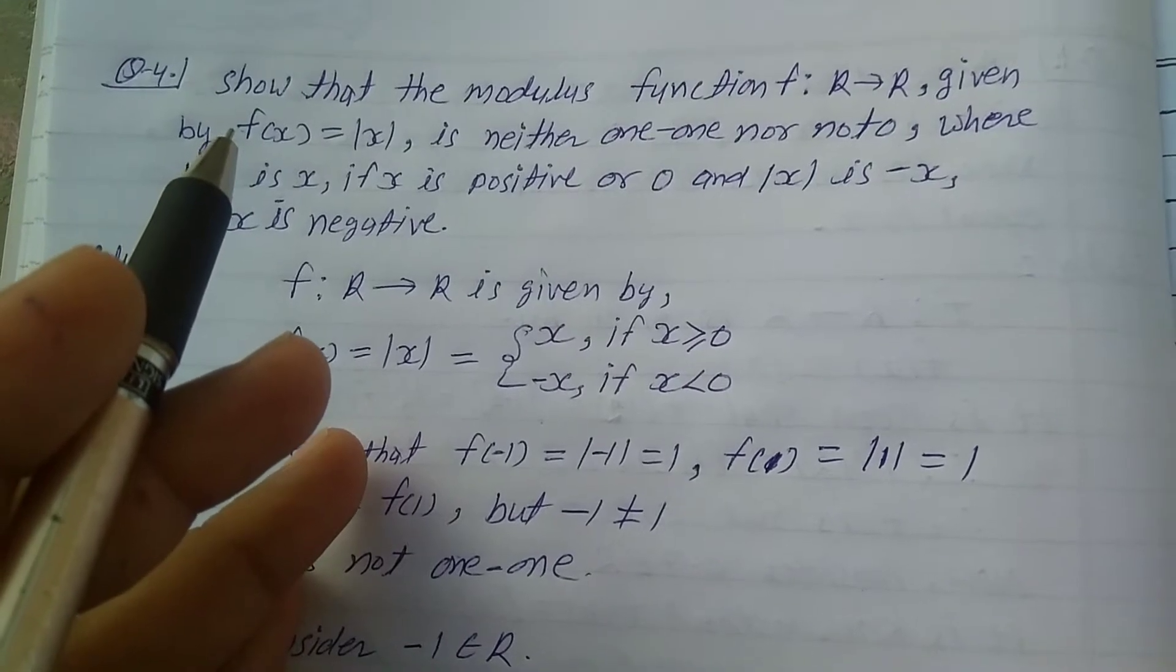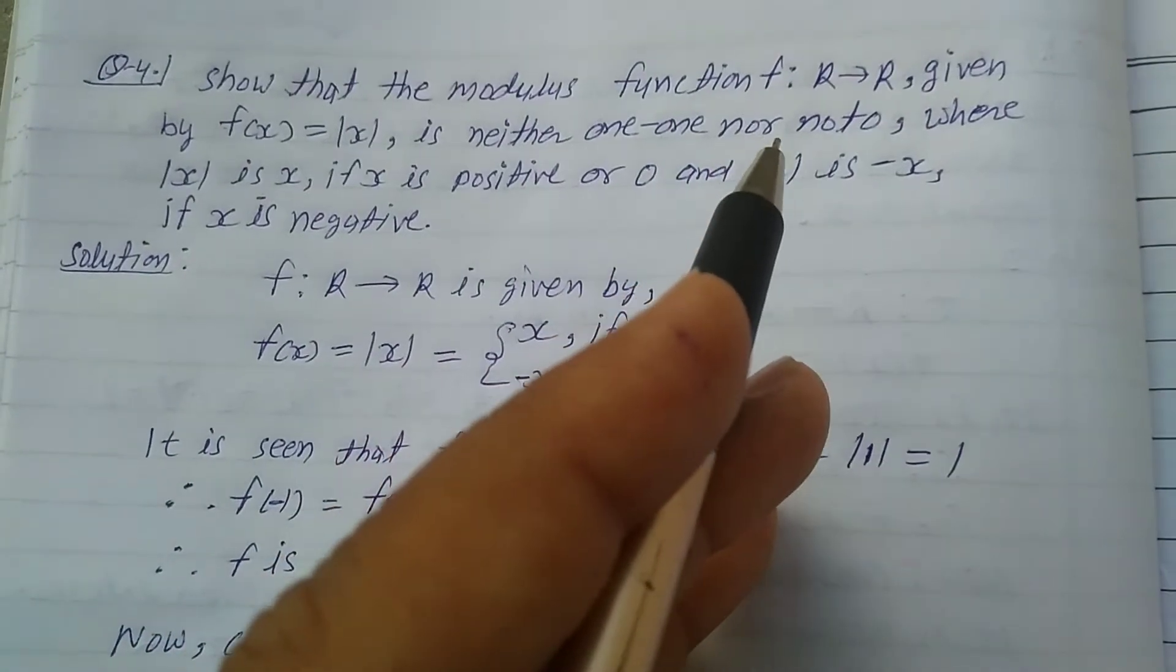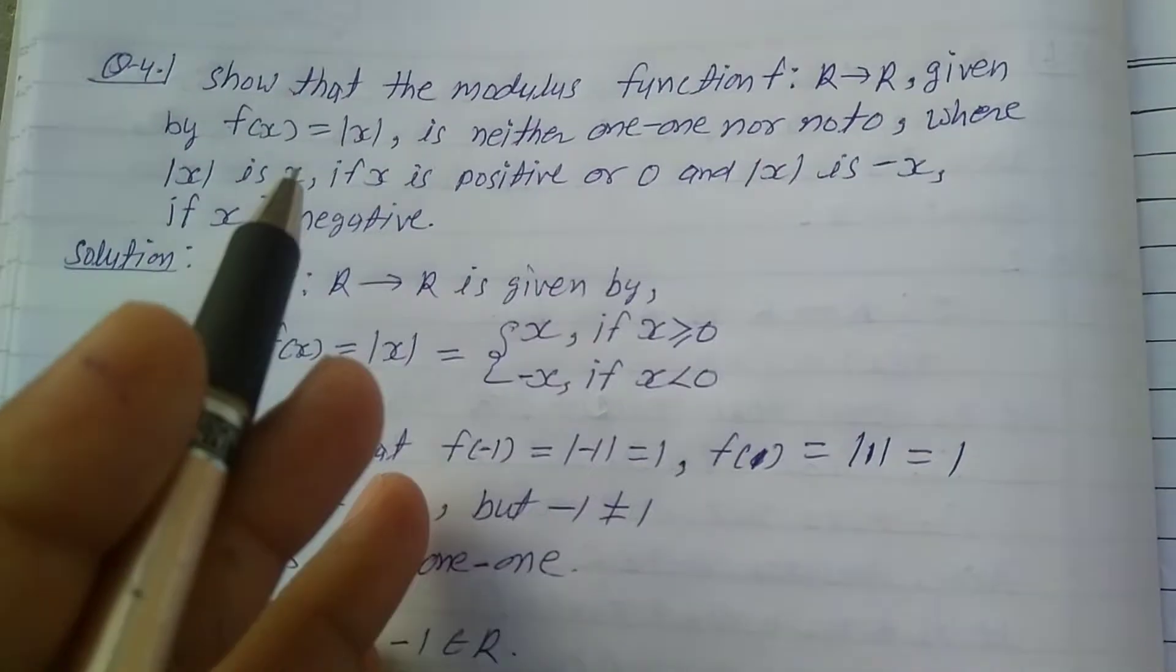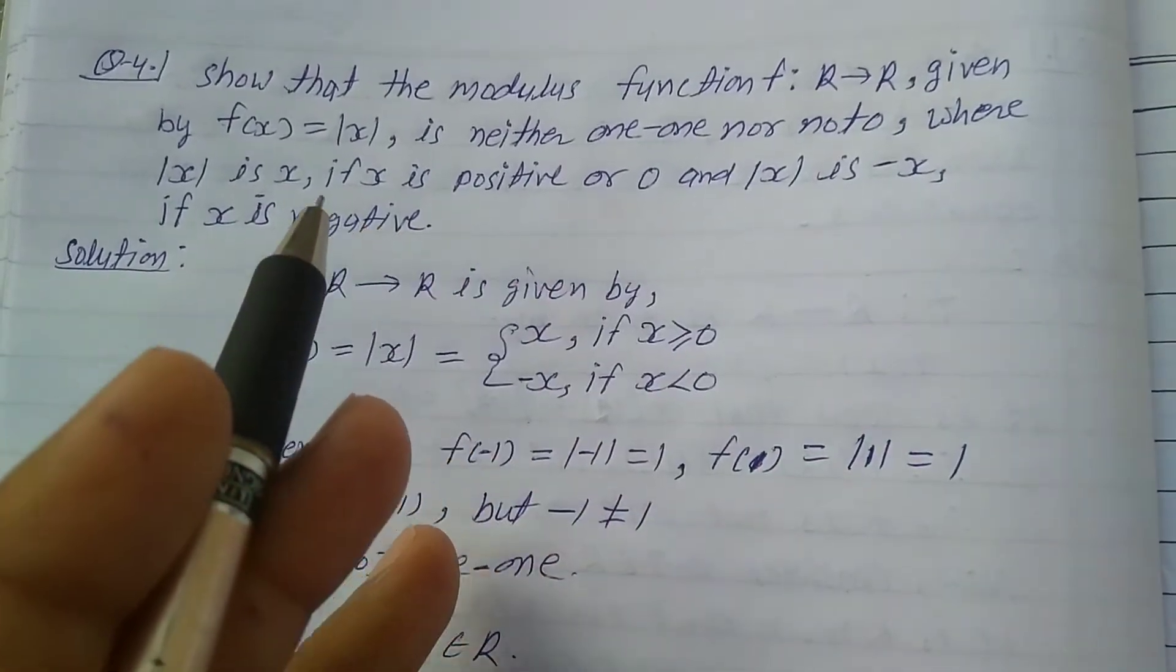Explaining question number 4 from Exercise 1.2, Class 12th. Show that the modulus function f: R → R given by f(x) = |x| is neither one-one nor onto, where |x| is x if x is positive or 0, and |x| is -x if x is negative.